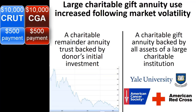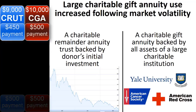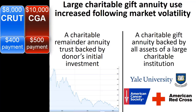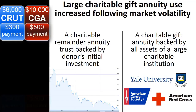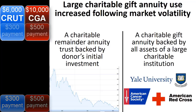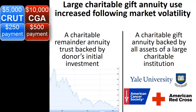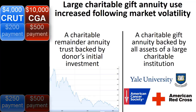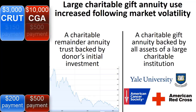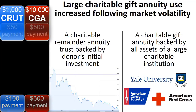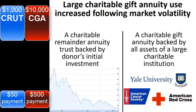Although other charitable planning vehicles, such as the charitable remainder trust, provide opportunities for influencing investment choices, they are also exposed to investment risk. When attention to investment risk is high, such as following a market crash, the attraction of the guaranteed gift annuity payments increases as compared with the risk of a charitable remainder trust.